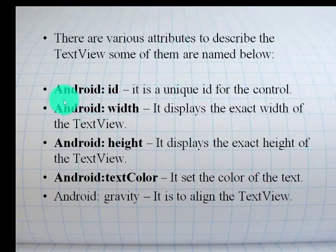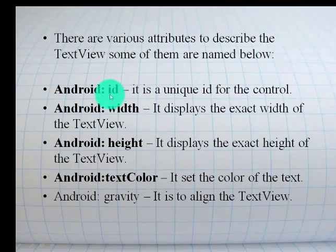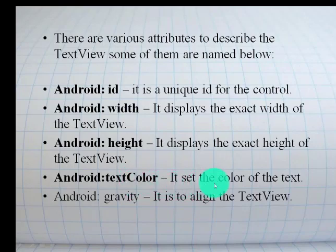Moving to the next part — properties of TextView. Each TextView has attributes; there are many attributes used to set the properties of the TextView. The first attribute is android:id — a unique name assigned to the control. In the coding, if you want to find the view by ID, you have to pass this ID to the findViewByID() method. The second property is width — the exact width of the TextView. We can also set the height of the TextView. There is a textColor attribute to set the text color, and android:gravity is used to align the TextView.